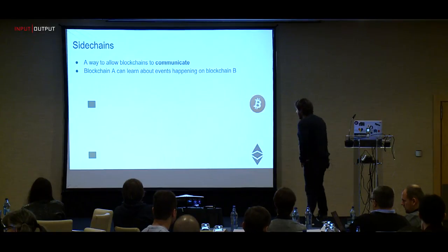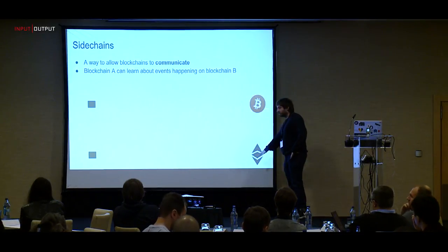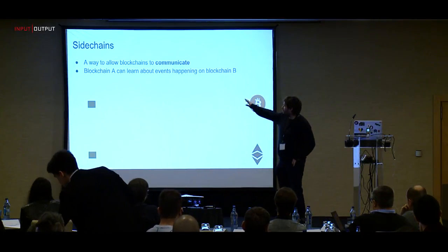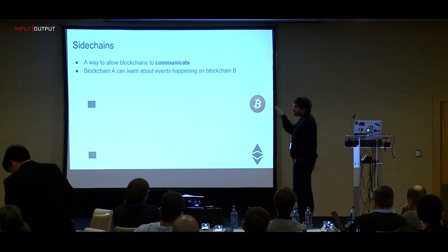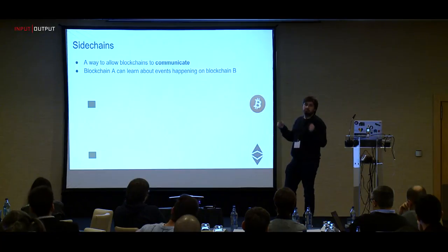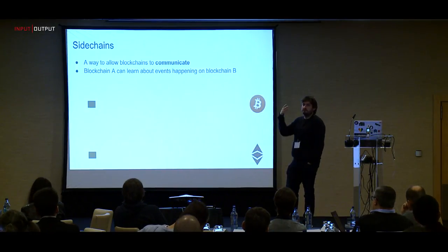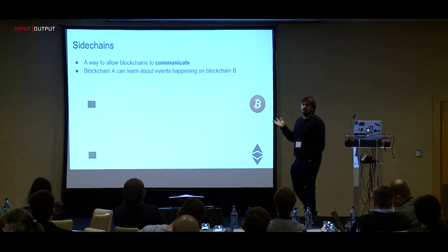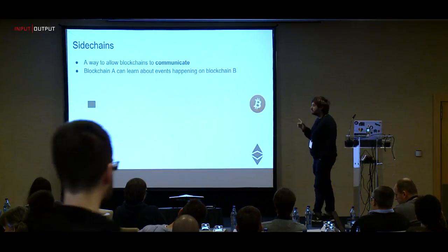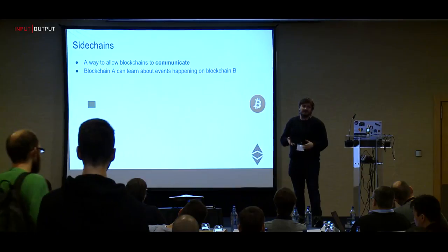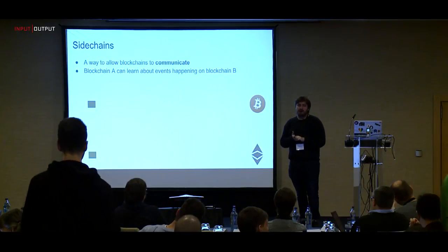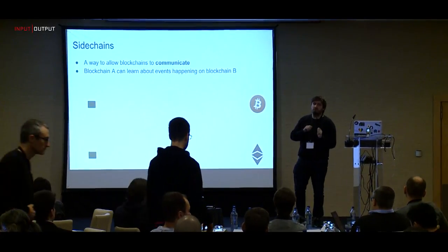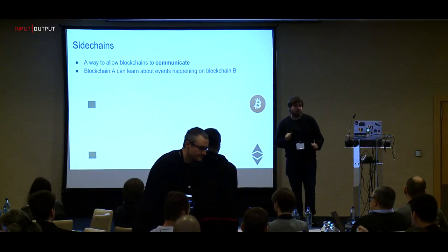So what is a sidechain? We have two blockchains — Bitcoin and Ethereum Classic — with separate genesis blocks. They're independent, standalone, separate systems. The idea is that sometimes you want them to communicate. I'll use the Bitcoin example throughout these slides, though unfortunately Bitcoin is unlikely to work with these schemes as it may need certain updates it's not willing to do.